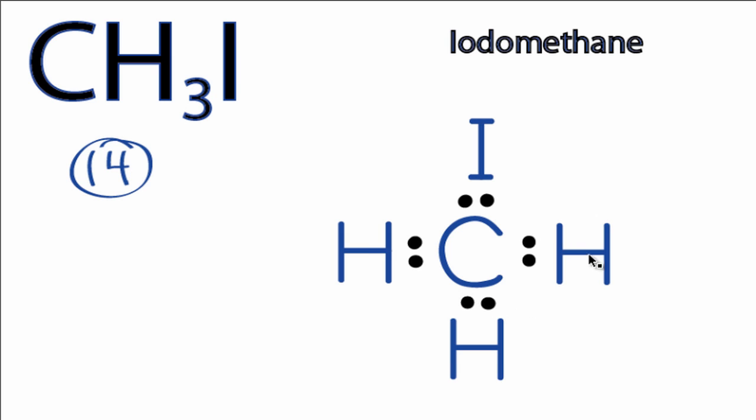We've used 8 valence electrons. Next, we'll put electrons around the iodine to fill its octet. So we have 8, 10, 12, and 14 valence electrons.